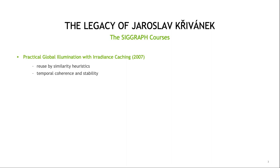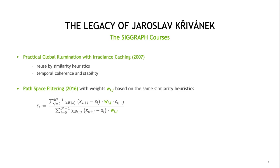His first course was on practical global illumination with irradiance caching, an algorithm that had kept a large part of the rendering industry busy at that time. Irradiance caching provided a way to speed up global illumination computations by sharing irradiance computations when appropriate. The possibility of sharing had been determined by similarity heuristics invented by Greg Ward. Jaroslav with Pascal Codron investigated the algorithm, provided a profound understanding of its limitations, extended it accordingly, and made it more practical.